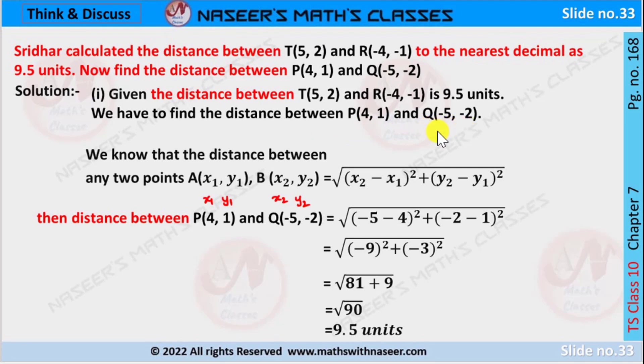We already know the distance between two points A(x₁, y₁) and B(x₂, y₂) is equal to square root of (x₂ - x₁)² plus (y₂ - y₁)².